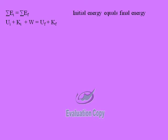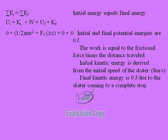The initial and final potential energies are zero joules. The work is equal to the frictional force times the distance traveled. Initial kinetic energy is derived from the initial speed of the skater using the equation one-half mv squared. And the final kinetic energy is zero because the skater comes to a complete stop.